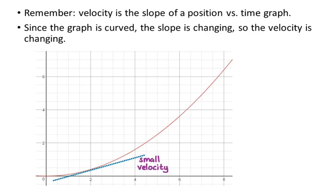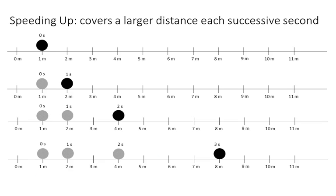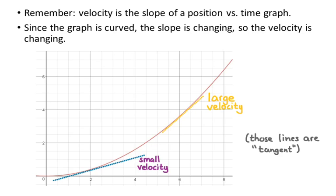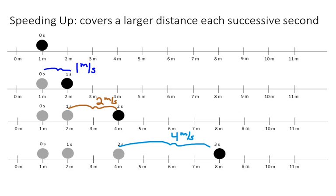Remember that velocity is the slope of the position-time graph. Since the graph is curved, the slope is changing, meaning the velocity is changing. If we draw tangent lines — at two seconds the line has a relatively small slope, while at six seconds it has a larger slope. During the first second we had an average velocity of one meter per second, during the second second two meters per second, and during the third second four meters per second. So the velocity is increasing over time, meaning the object is speeding up.